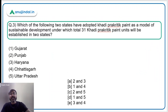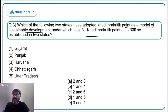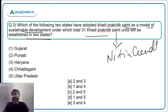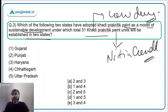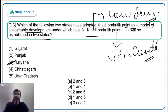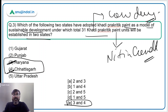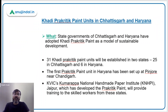Question number 3: which two states have adopted Khadi Prakritik Paint as a model of sustainable development, under which 31 Khadi Prakritik Paint units will be established? Remember that Nitin Gadkari is the brand ambassador of Khadi Prakritik Paint and it is made up of cow dung. The two states which have adopted it are Chhattisgarh and Haryana — Option E, three and four, is the correct answer.